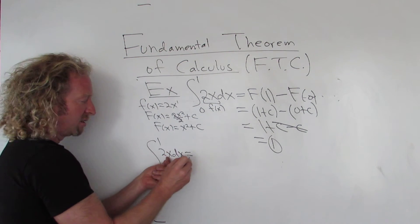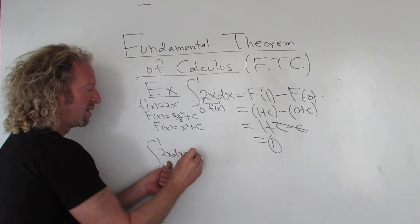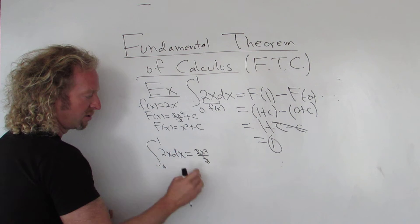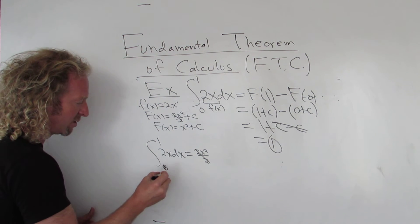So what you would do is you would just integrate this, and you would ignore the c. So you would get 2x squared over 2, so 2's cancel, so you would just get x squared.